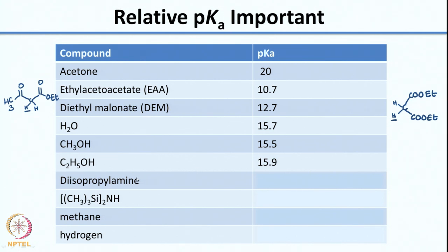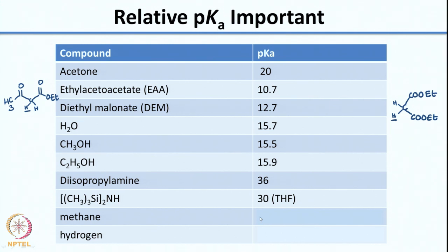Diisopropylamine and an amine with two silyl groups next to the nitrogen have pKa's of 36 and 30 respectively — significantly higher than ethanol or methanol, because you are generating an N⁻ ion with releasing groups on both sides. Methane has a conjugate base CH3⁻, which is not as stable as methoxide, giving a very high pKa of 56. Hydrogen has a lower pKa of 36. So having a feel for these values is very useful.